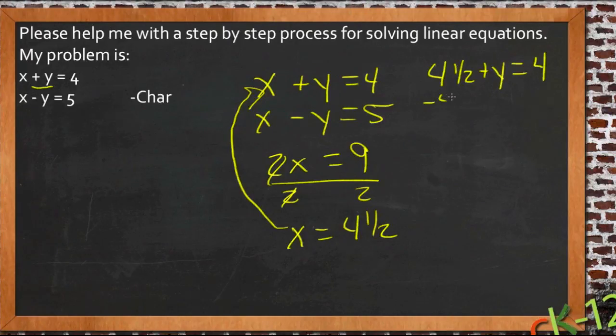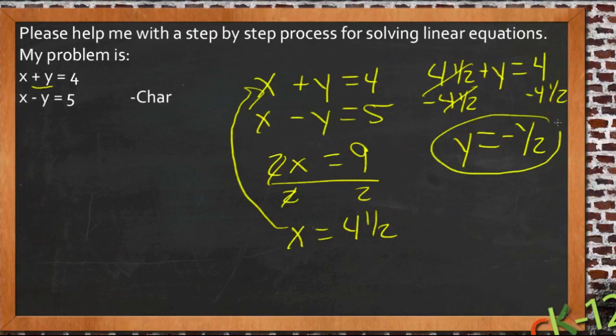Subtract 4 and a half from both sides. And I get y equals 4 minus 4 and a half, which is negative one half. So then my pair of values is x is 4 and a half, y is negative one half. And you can see that went pretty smooth once I knew which way to solve it I wanted to use.